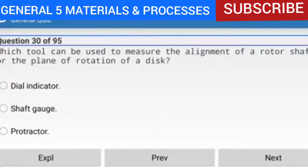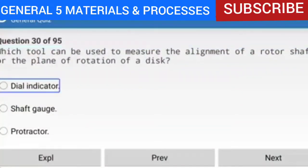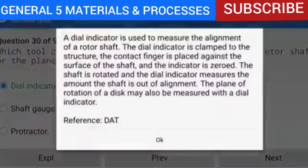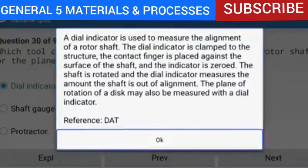Question 30 of 95: Which tool can be used to measure the alignment of a rotor shaft or the plane of rotation of a disc? The answer is a dial indicator. The dial indicator is clamped to the structure, the contact finger is placed against the surface of the shaft, and the indicator is zeroed. The shaft is rotated and the dial indicator measures the amount the shaft is out of alignment. The plane of rotation of a disc may also be measured with a dial indicator.